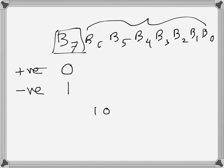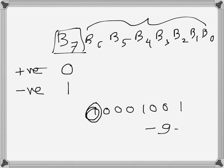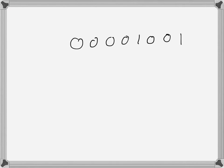So 10001001 in signed magnitude representation is equivalent to minus nine, while as an unsigned number it would be 137. That's signed magnitude — we simply look at the most significant bit: if it's one, the number is negative; if it's zero, it's positive. For example, 00001001 in eight-bit signed magnitude representation is simply positive nine.